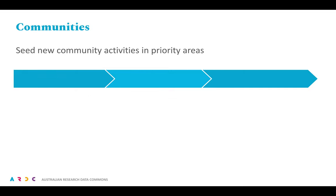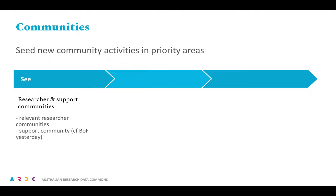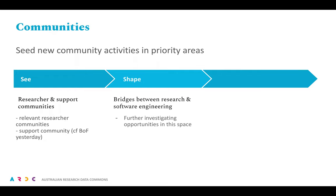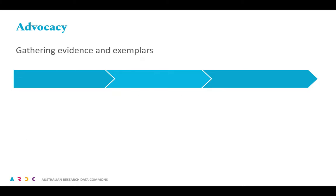Broadly speaking, we are looking to seed community activity across all three areas. For See, we are considering relevant researcher communities at a scale that we can handle, as well as working with existing research support communities. For Shape, we are still investigating, but the agenda consultations unearthed a large number of potential partners. For Sustain, we are still too early to report back, but this clearly relates to supporting the RSE Association of Australia and New Zealand. Finally, for advocacy work, some of our actions are waiting for the relevant communities to fall into place. We believe that the three reports will inform future directions, and should hopefully unearth the raw materials for some good case studies.